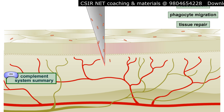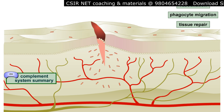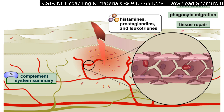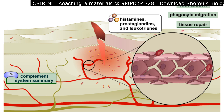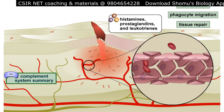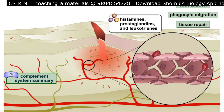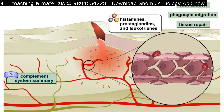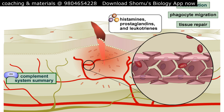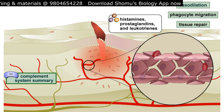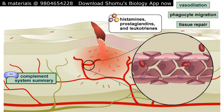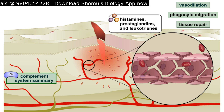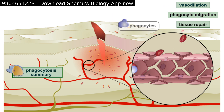Damaged cells release several chemicals such as histamines, prostaglandins, and leukotrienes. Certain components of the complement system can also stimulate the release of histamines. One function of these chemicals is to cause vasodilation, an increase in the diameter of the blood vessels. This vasodilation results in more blood and therefore more phagocytes, oxygen, and nutrients being delivered to the site of injury, resulting in redness, heat, swelling, and some of the pain associated with inflammation.